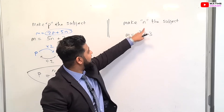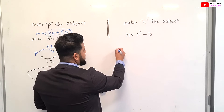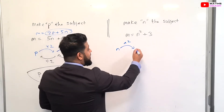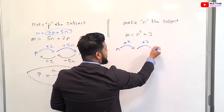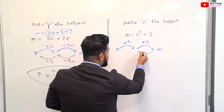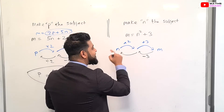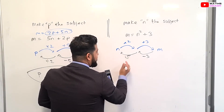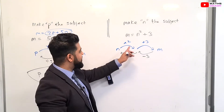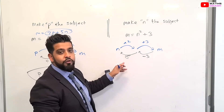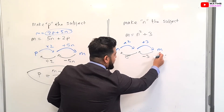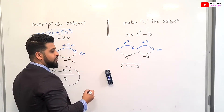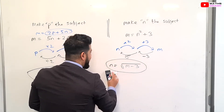Now let's look at this one. We want to make N the subject and we have M = N² + 3. Starting with N: N is being squared — powered by 2 — then 3 is added, giving M. Working backwards: opposite of plus 3 is minus 3; opposite of squaring is square rooting. So we get M minus 3, then square root that, giving √(M − 3) = N. Note: if it were to the power of 3, you'd take the cube root, and so on.